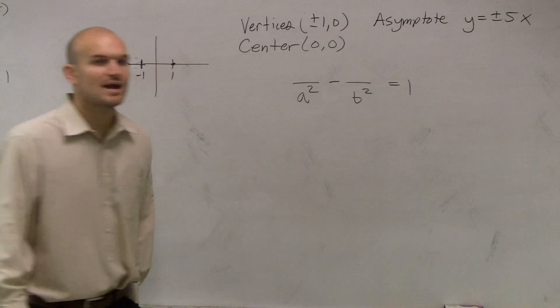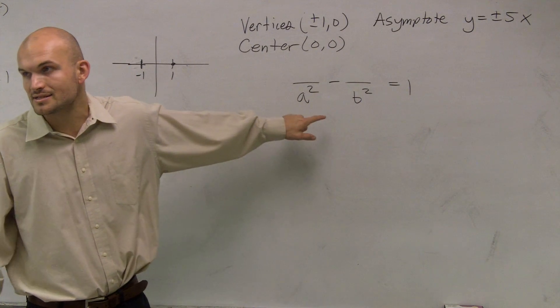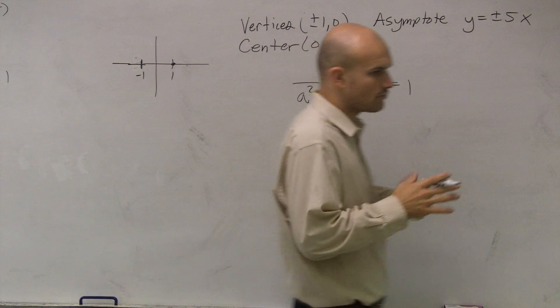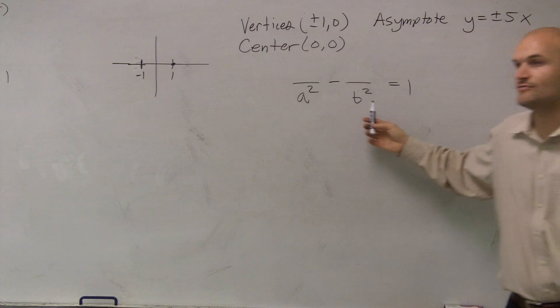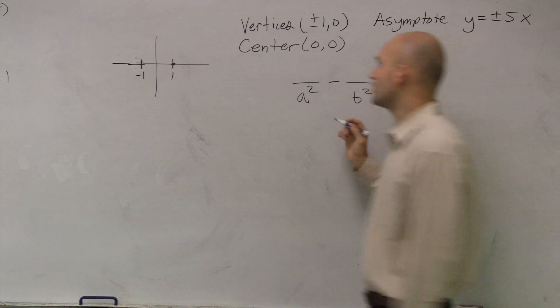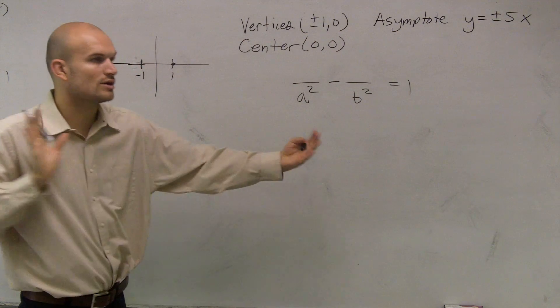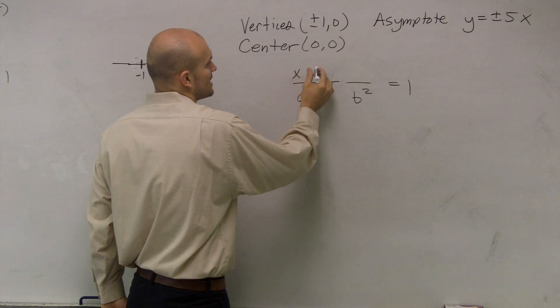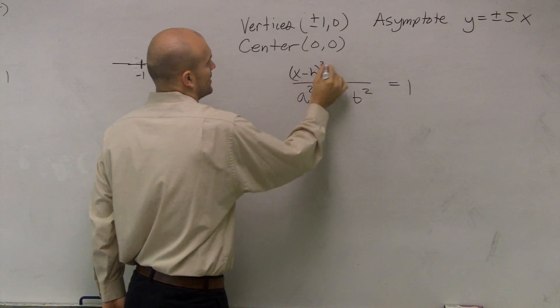So now we're going to be subtracting. So therefore, our major axis, or not really a major axis, but now where we're going to be opening is going to be subtracting from our b. So our a is now going to be subtracting from the b. And therefore, since this is going to be opening up horizontally, I'm going to use (x - h) up there.